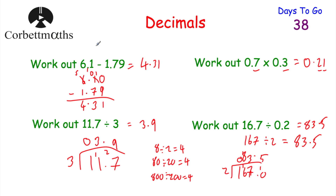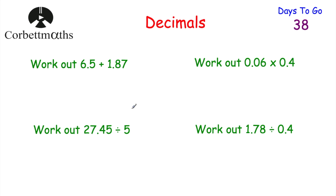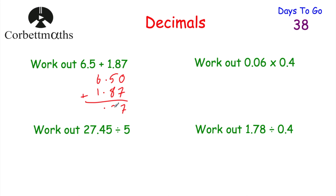If you got those four answers, well done. Now here are another four questions to try. The first is 6.5 plus 1.87. Lining them up with a zero placeholder: 0 plus 7 is 7, 5 plus 8 is 13 so put down 3 carry 1, and 6 plus 1 plus 1 is 8. So the answer is 8.37.